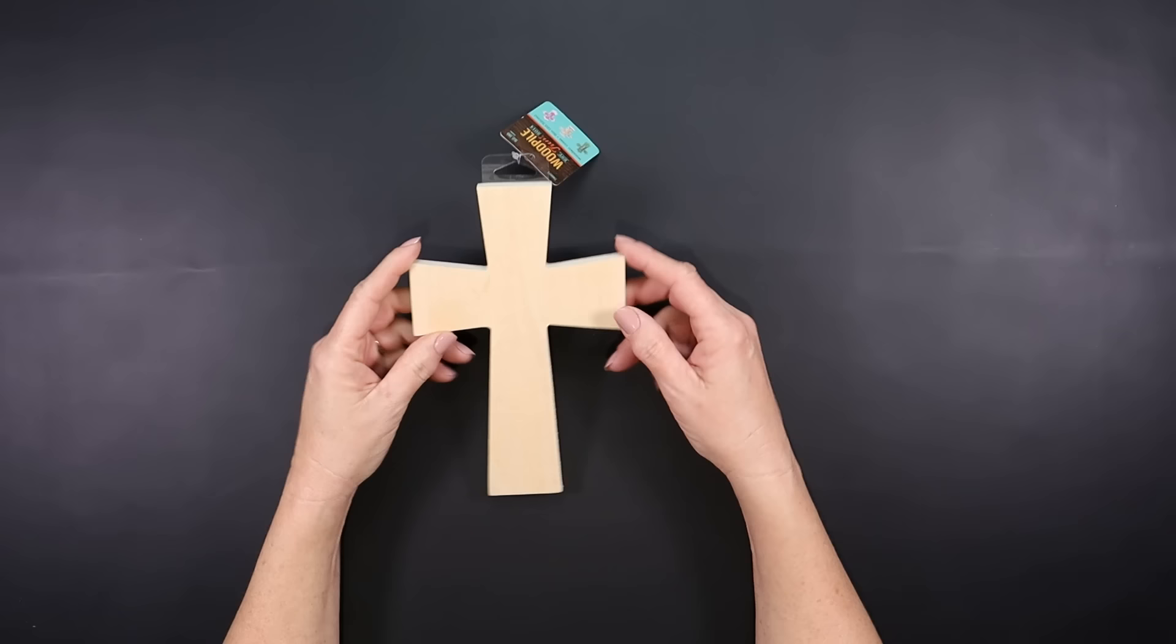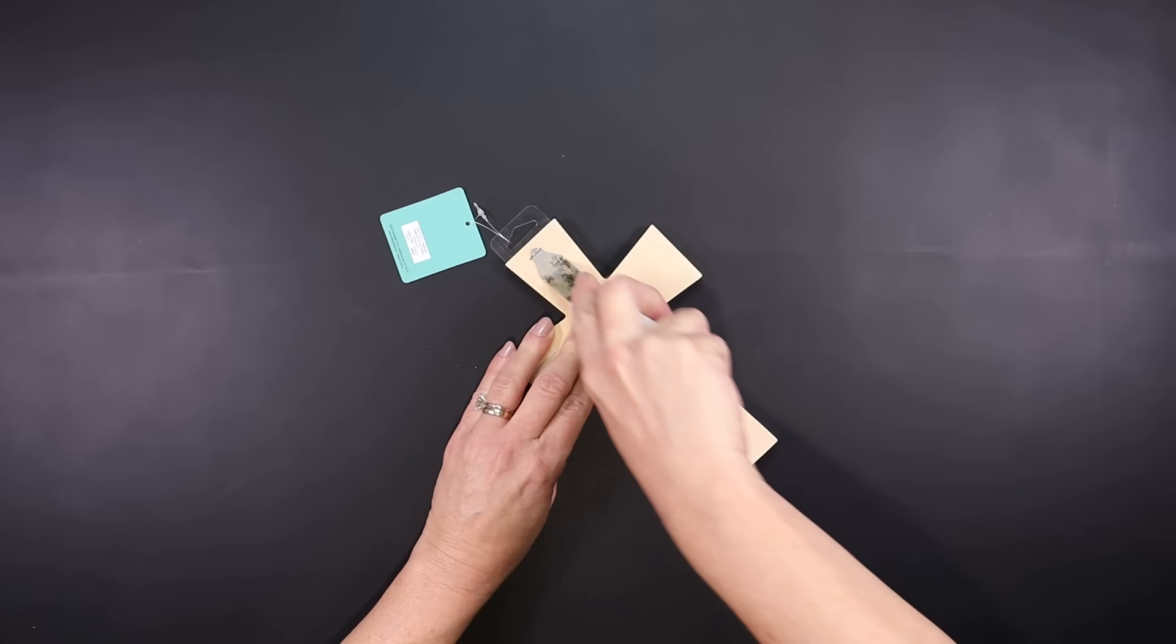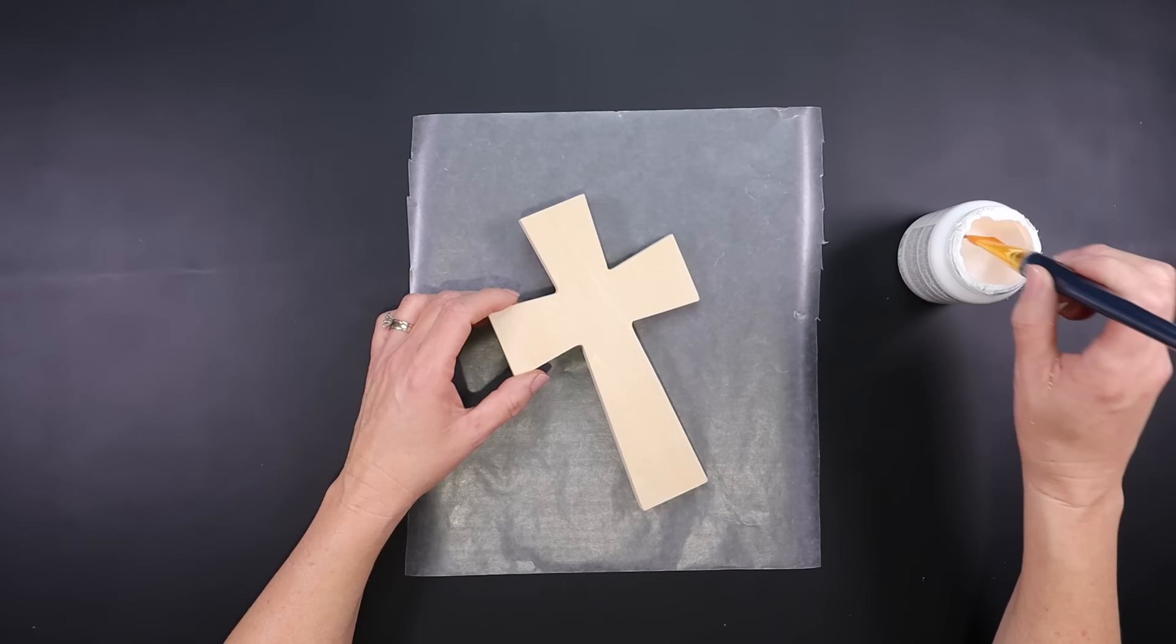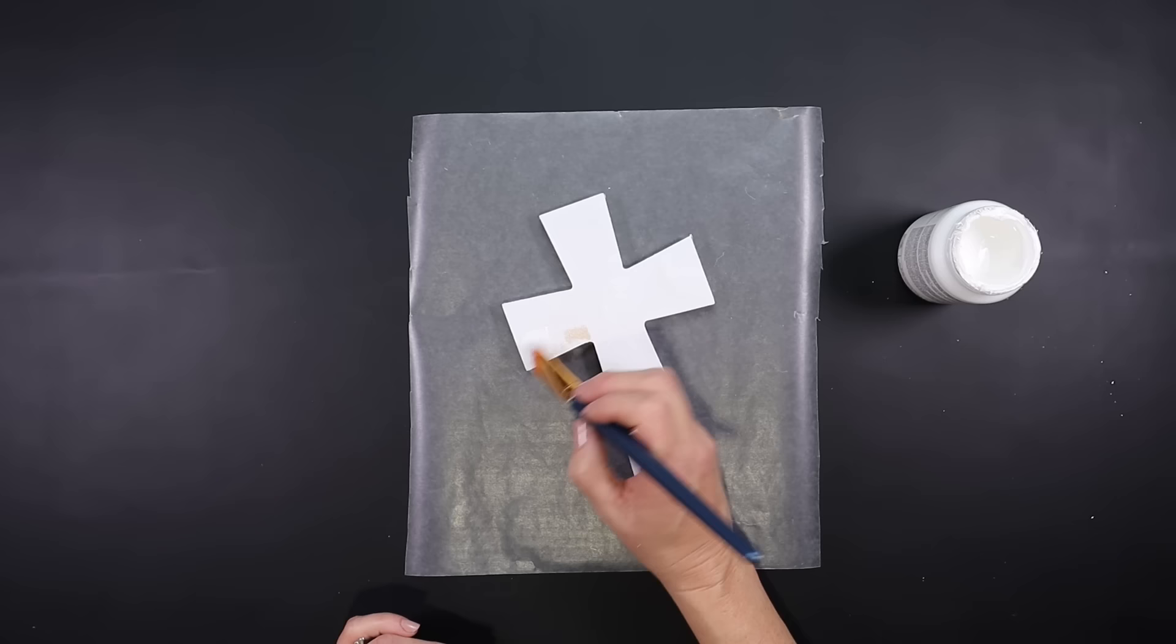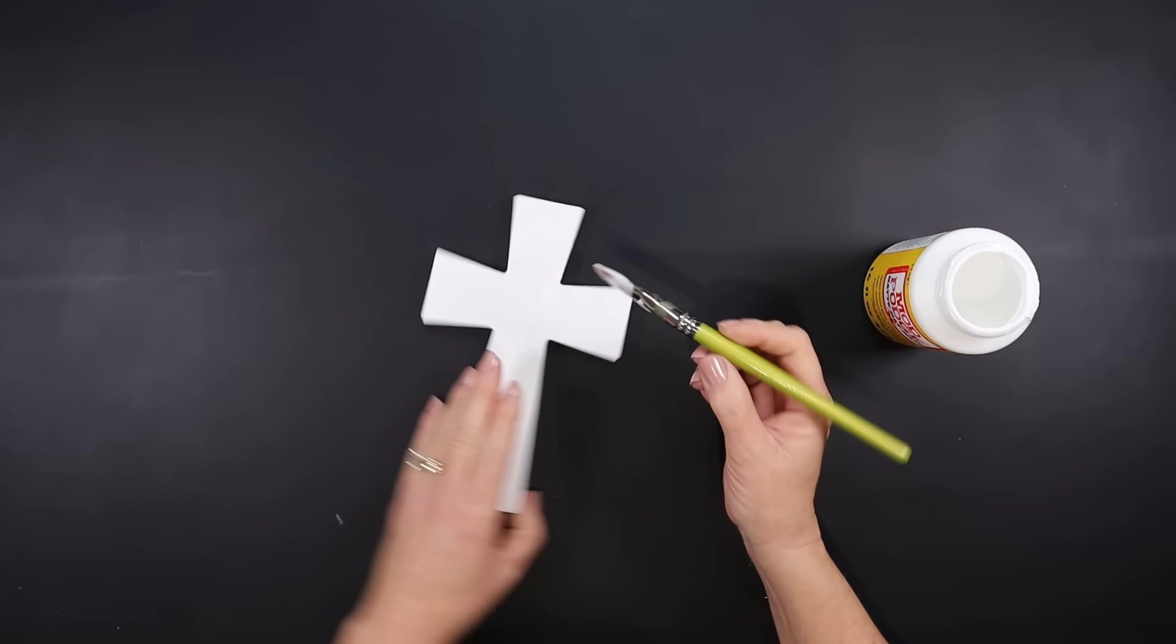I'm using a wooden cross from Hobby Lobby, but you can find wooden crosses at Dollar Tree, Walmart, or even Family Dollar. I will be giving this one coat of white paint on all sides. Now that the paint has dried, I'm going to add a layer of Mod Podge only to the top and set that to the side and let it dry.